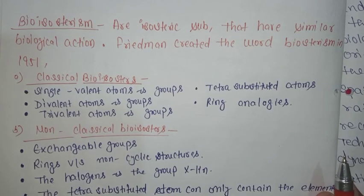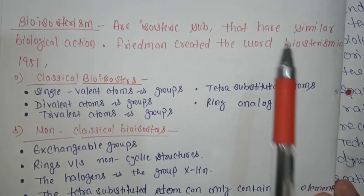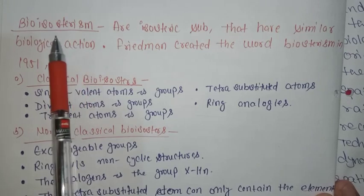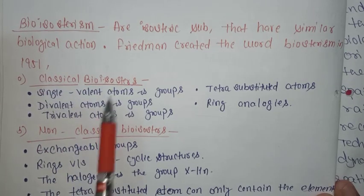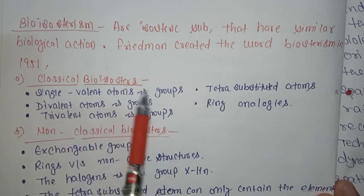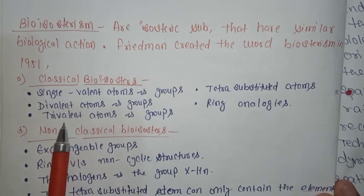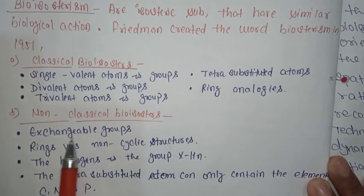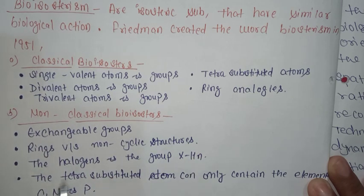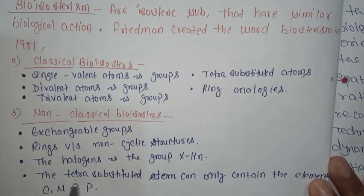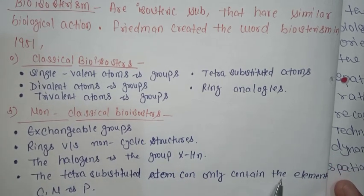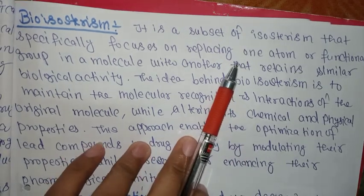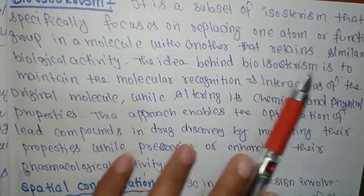Bio-isosteres are isosteric substances that have similar biological action. Friedman created the word bio-isosterism in 1951. Bio-isosteres are of two types: classical bio-isosteres and non-classical bio-isosteres. Classical bio-isosteres include monovalent atoms or groups, divalent atoms and groups, trivalent atoms and groups, tetra-substituted atoms, and ring analogues. Non-classical bio-isosteres are exchangeable groups, rings versus non-cyclic structures, and the halogens and the group XHN. The tetra-substituted atoms can only contain the elements carbon, nitrogen, and phosphorus.